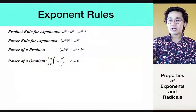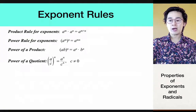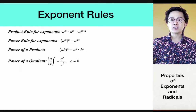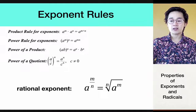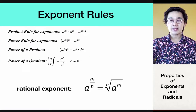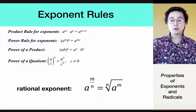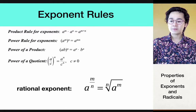For the exponent rules, we already know the product rule, the power rule, the power of the product, and the power of the quotient. These are some of the laws of exponents you'll apply in simplifying radical expressions. We're going to highlight the rational exponents rule: if we have a raised to m over n, we can transform it into a radical by writing it as the nth root of a to the m.